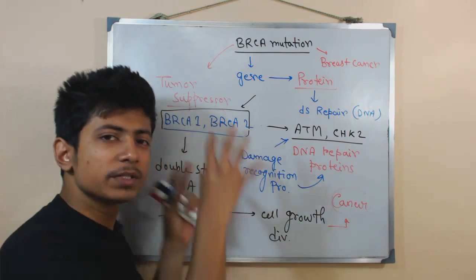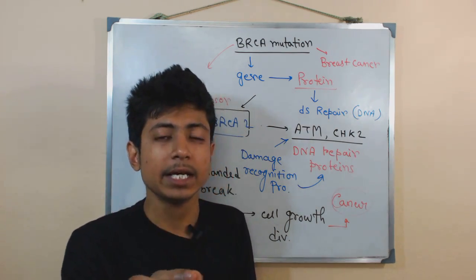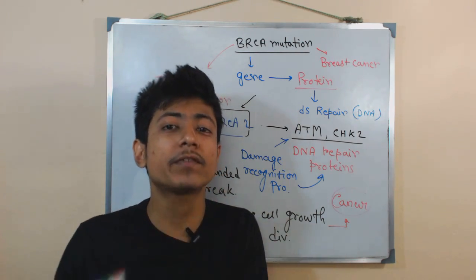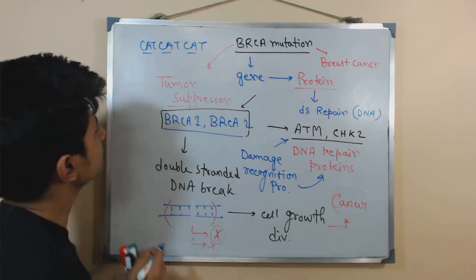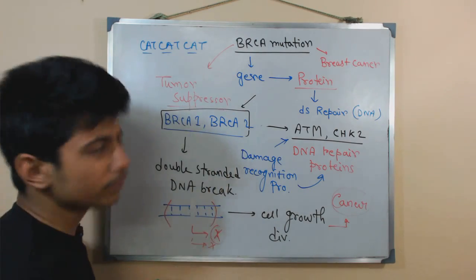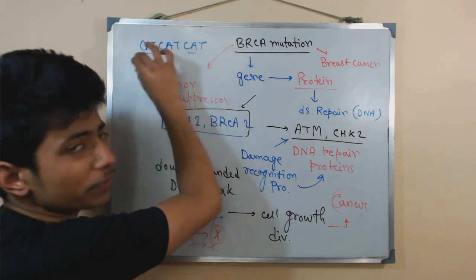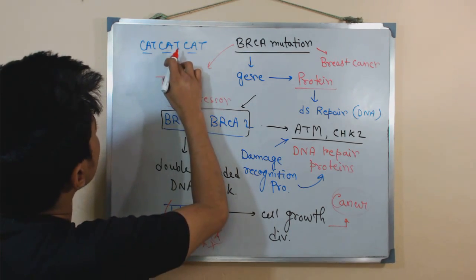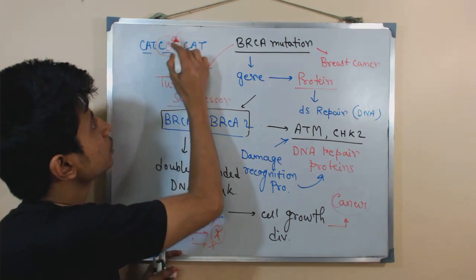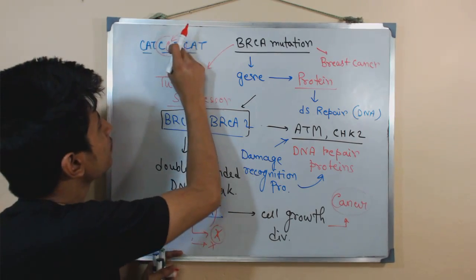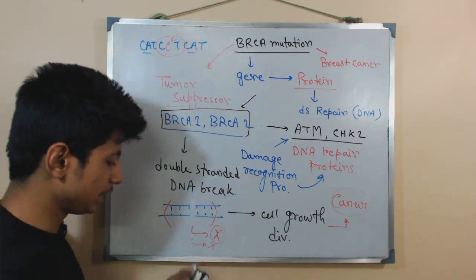Now let's talk more about the type of mutation happening in BRCA. The mutations seen in BRCA are majorly point mutations — a single nucleotide change in the DNA which changes the whole reading frame. For example, if we have the codon CAT, which codes for histidine, and there is a point mutation where the A is replaced by C, we now have CCT, which codes for proline instead of histidine.